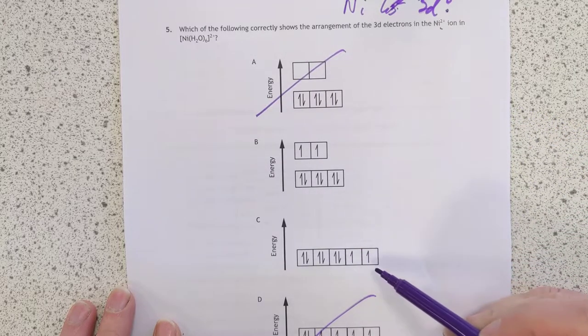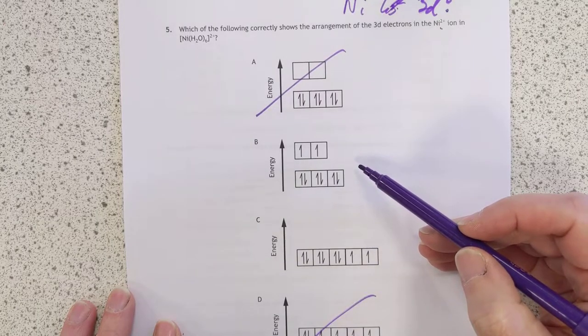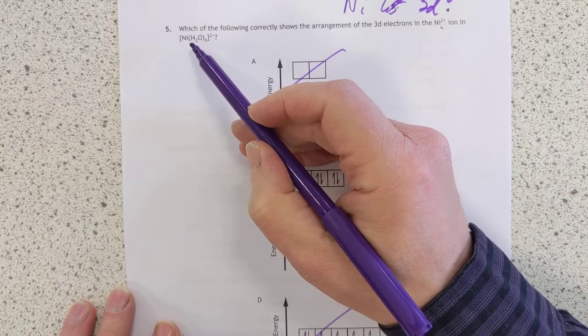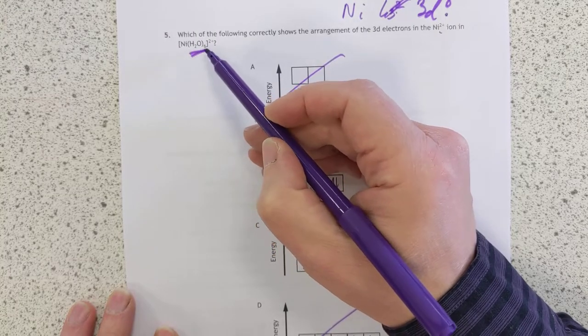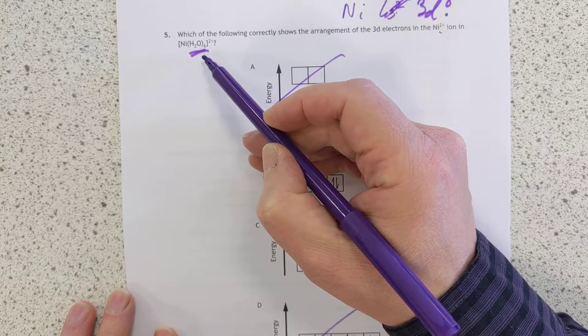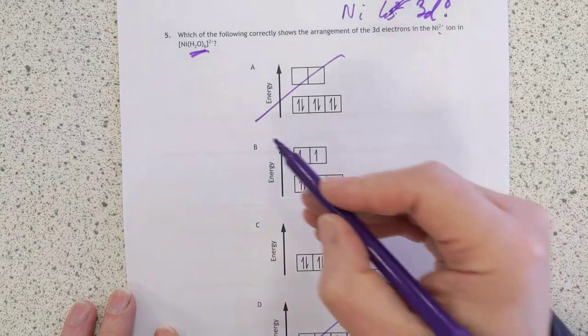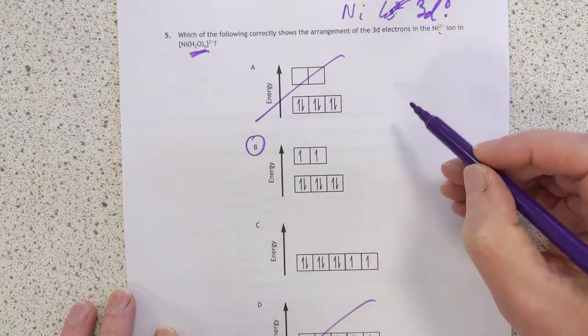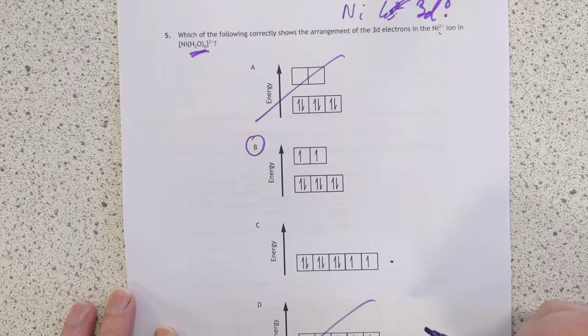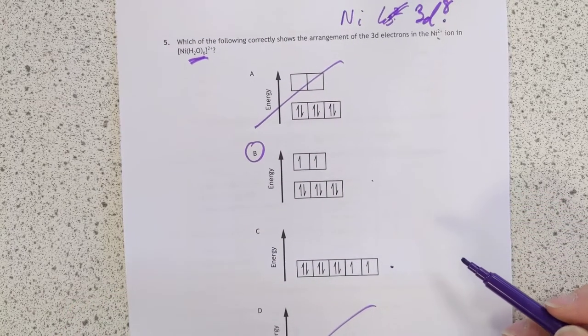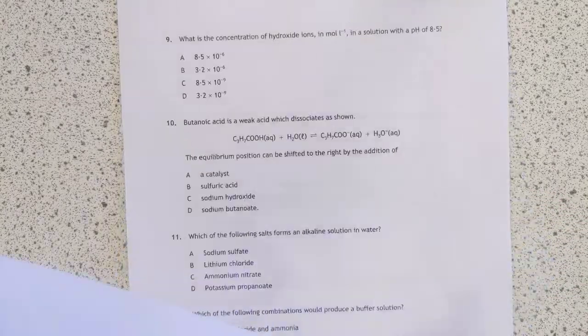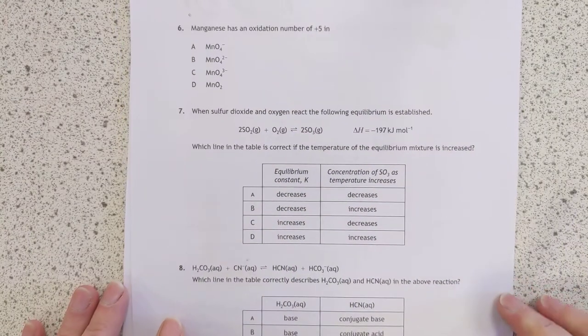Would they all be degenerate or would they be split? Of course, the water, the presence of the ligands causes the splitting. That's how you know the answer is B. If it was just isolated nickel atoms in space in a vacuum, that's the answer. But this is because the electrons have been split by the ligands. The D electrons have been split by the ligands.